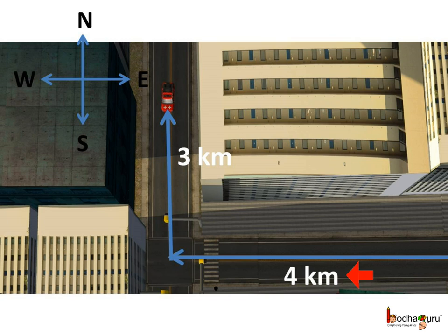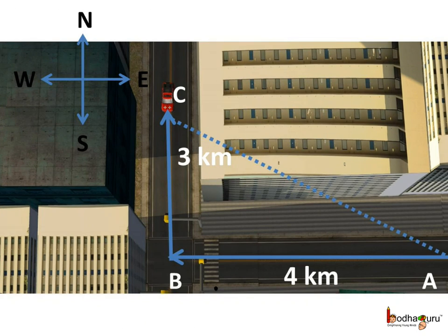Aman drives 4 km towards west and then 3 km towards north. What is the distance between his present position and his starting point? We can represent this problem using a triangle. AB here is 4 km, then BC which is 3 km. Now we have to find the length of AC, which is the distance between his present position and the starting position.